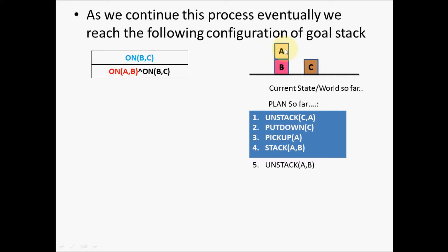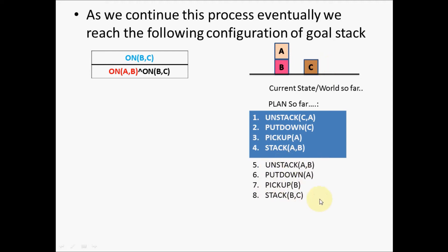The next action is put_down(A), where block A currently held by the robotic arm will be placed on the ground. Next, block B, which is now clear, will have to be picked up. Finally, since the robotic arm is holding B and block C is clear, you will stack block B on top of block C. These are the actions executed as you continue solving using goal stack planning. At the end of step number eight in the plan, the current world will look like this.